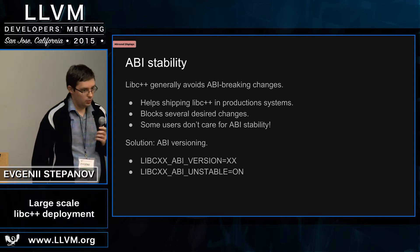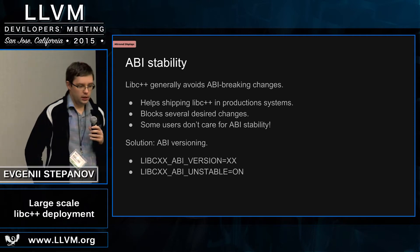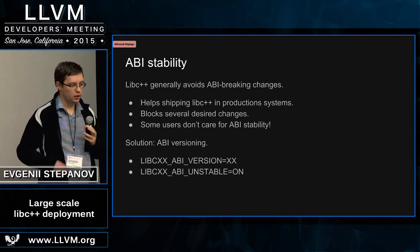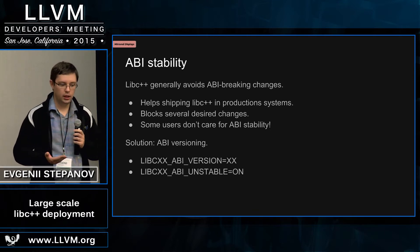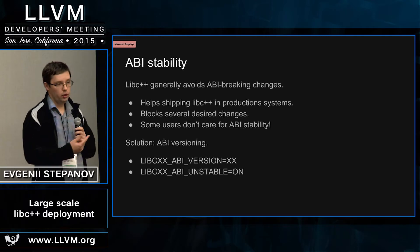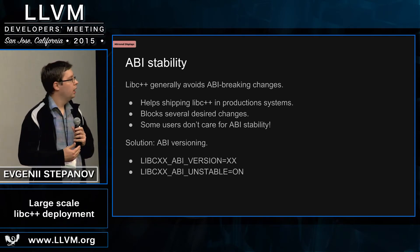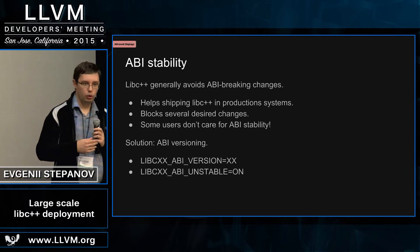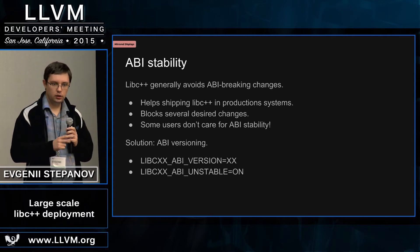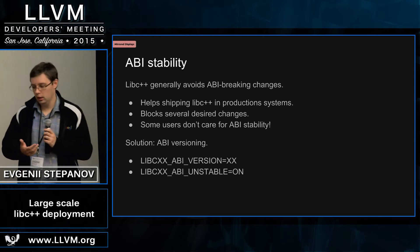So the next problem is ABI stability. There are a few good reasons to keep libc++ ABI stable, but some users, like Google for example, don't really care about that, and what we really want is all the best features of the standard library, whether they break ABI or not. This is something that's already implemented in libc++ — it's a fresh thing: ABI versioning. You can build libc++ by defining two CMake variables for some specified ABI level, and you can even require an unstable ABI, which will turn on all the features in the code base. Currently we have one such feature in std::string — it enables the new string layout, which places the string buffer at the beginning of the object, improving its performance and alignment.